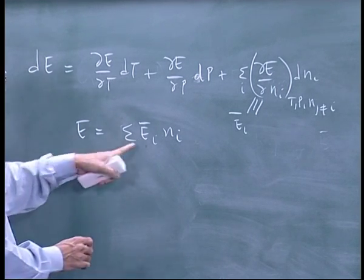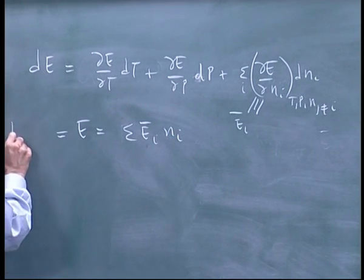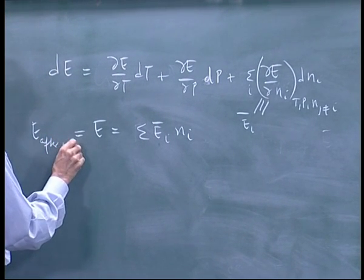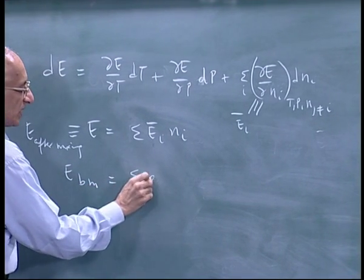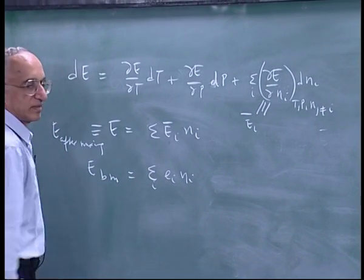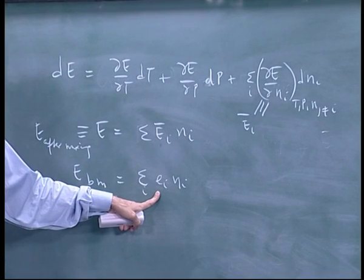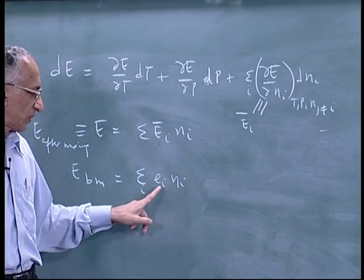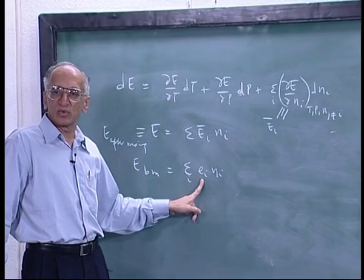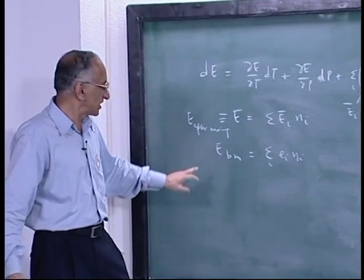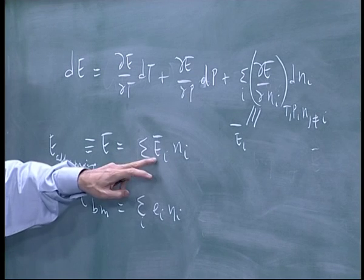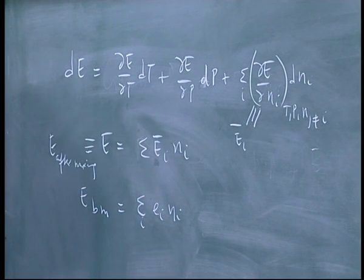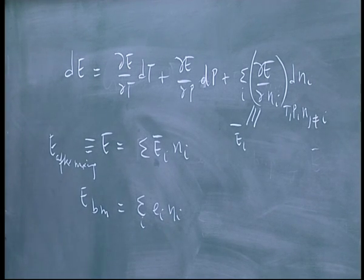This equals E after mixing. E before mixing is the sum of Ei times ni, where Ei is the pure-component property. After mixing, the property changes from Ei to Ei bar. So to understand the mixing process, one must know how to calculate Ei bar — that is the central problem in mixture theory.